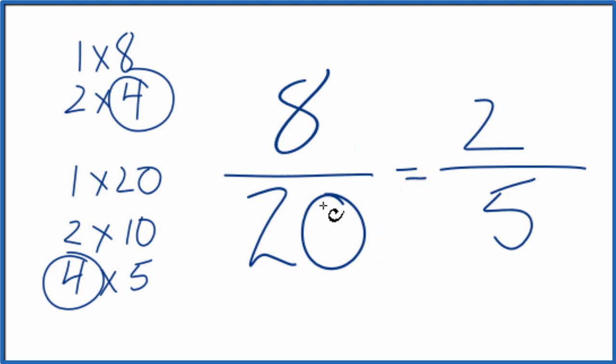We've simplified or reduced 8/20 down to 2/5. You can't simplify this any further. If you divide 2 by 5 or 8 by 20, you'll get the same value. They're equivalent, just reduced.